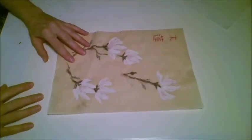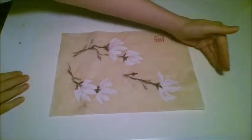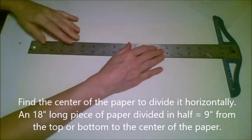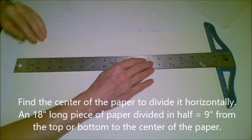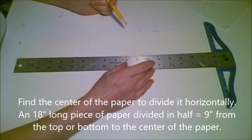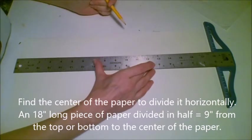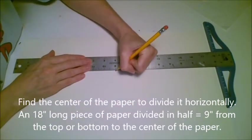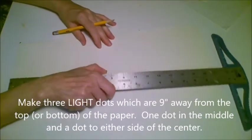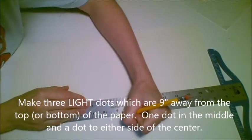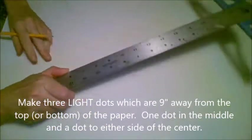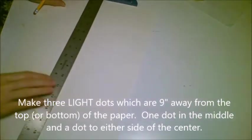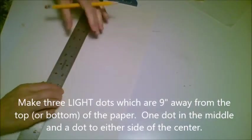So first thing I want to do is find the center of my long piece of drawing paper lengthwise. So if your drawing paper is 18, what's half of 18? 9. That's right. So I'm going to place a mark at the 9 very lightly with a pencil. I'm going to do this at least three times. One in the middle and two on either side.